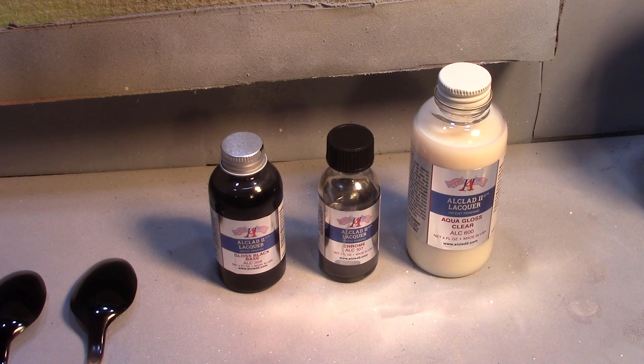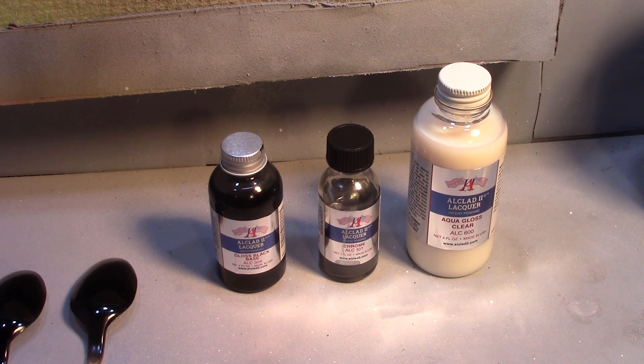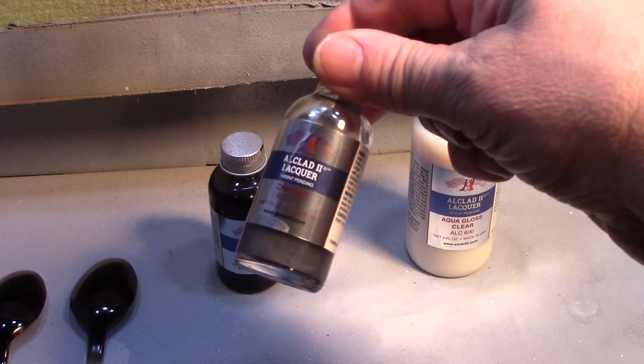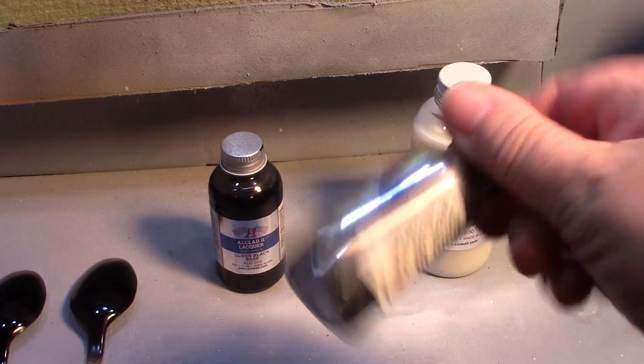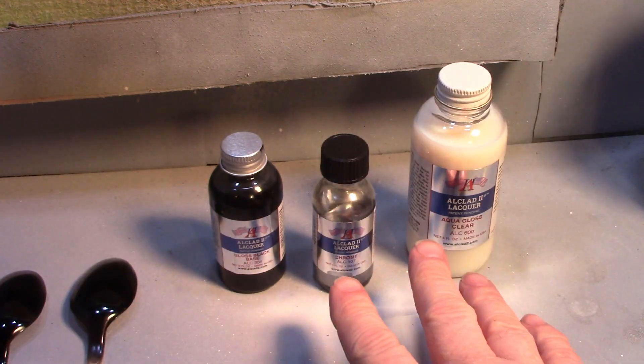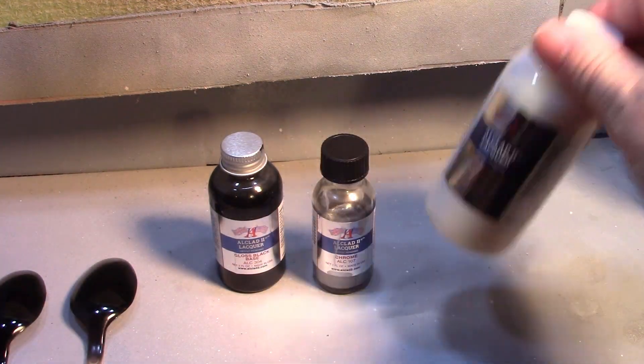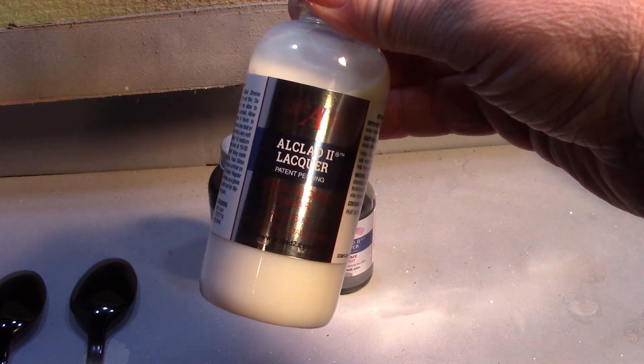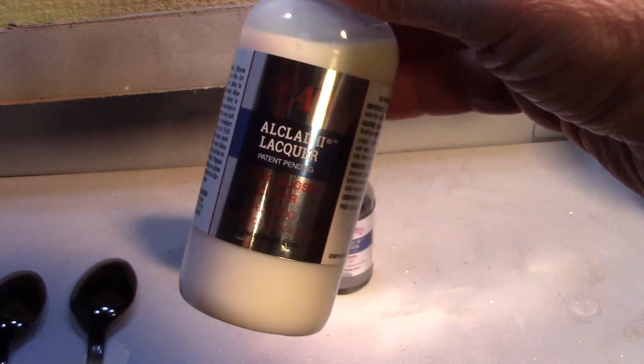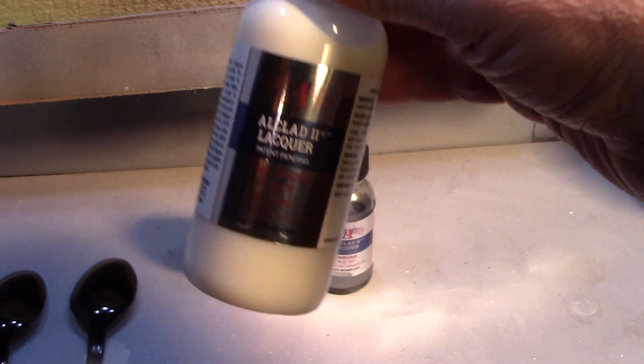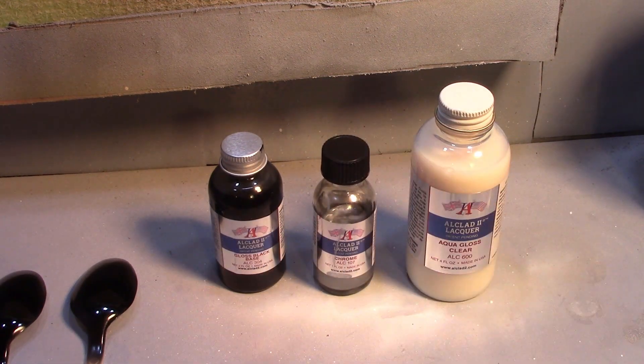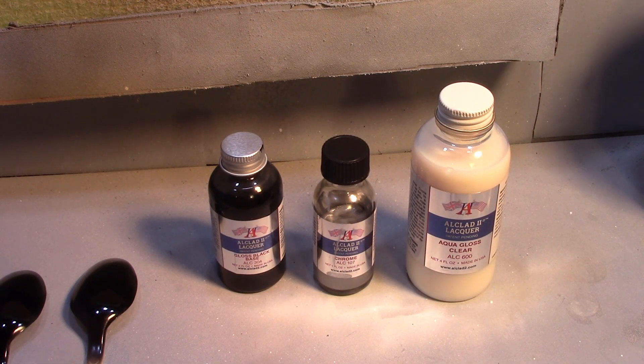So I have been told that this Alclad right here is a really good chrome. This is an airbrush paint obviously. And I have been told that if you use the Alclad's Aqua Gloss clear—they have other clear coats too that the same company makes, but you have to use the Aqua Gloss clear—supposedly it does not ruin your finish. I'm gonna find out.